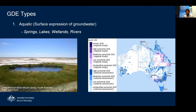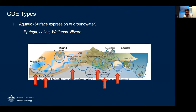The first type is aquatic GDEs, which represent the surface expression of groundwater — once groundwater enters the surface, it is considered an aquatic GDE. This includes springs, lakes, rivers, and wetlands. You can see in the diagram lakes being fed by a localised water table, rivers, and different examples of wetlands.